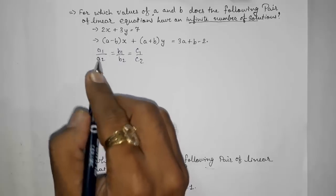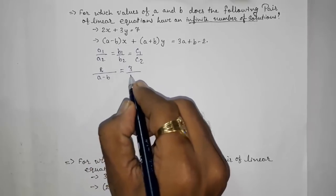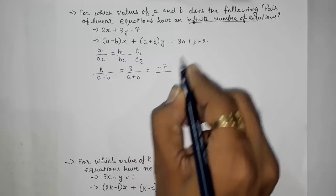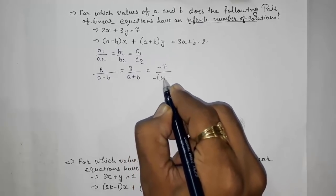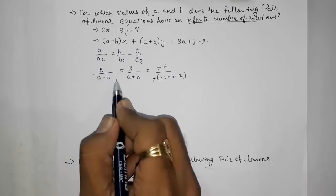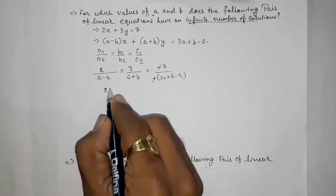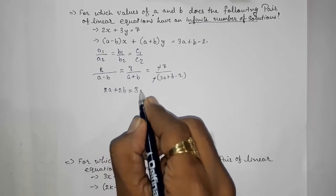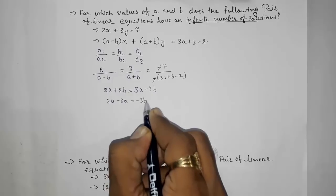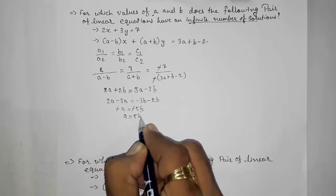When there are infinitely many solutions, a1/a2 = b1/b2 = c1/c2. Put the values: a1 = 2, a2 = (a - b), b1 = 3, b2 = (a + b). Arrange in standard form so c1 becomes -7 and c2 becomes -(3a + b - 2). Now do cross multiplication of the first two ratios: 2(a + b) = 3(a - b), giving 2a + 2b = 3a - 3b.